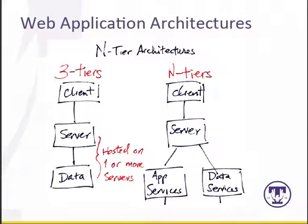With web applications, we really start to take different parts of the application and spread them across different components, but really across different machines. So what we have with web applications are what we call N-tier architectures. You can break it down to there being three tiers: a client tier, a server tier, and a data tier.